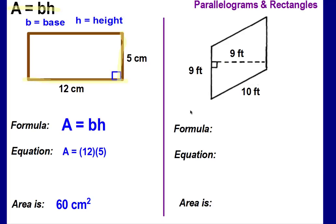Now let's look at parallelograms. It's the same formula: area equals base times height. This particular parallelogram is turned, so when looking for the base, the bottom side is slanted — it's not flat, like a TV that would fall over. You need to look for the side that sits flat. You could turn the figure around if needed, but that flat side is your base.